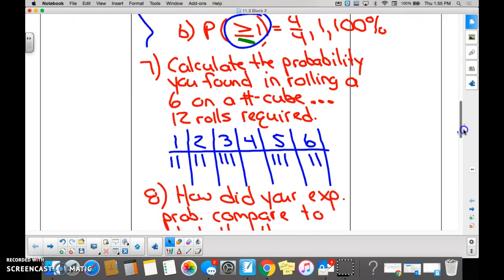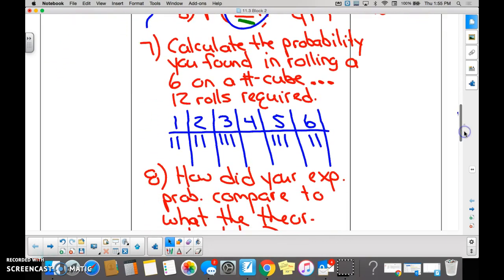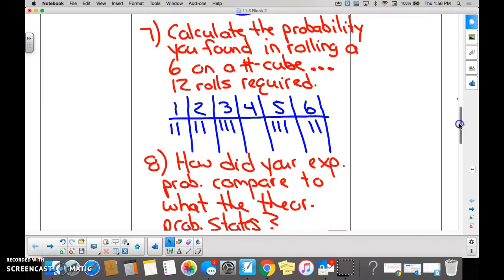And then we did this. What kind of probability was this here when we actually rolled the number cube 12 times? And this was Heidi and Sharon's data, right?